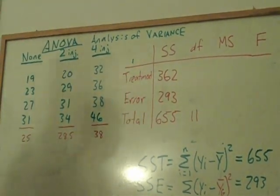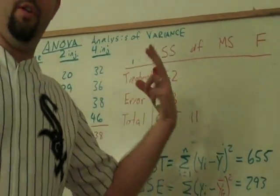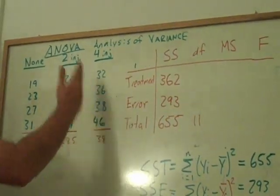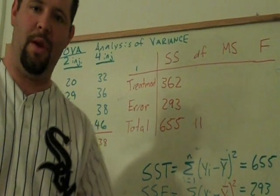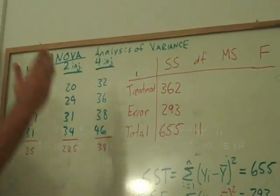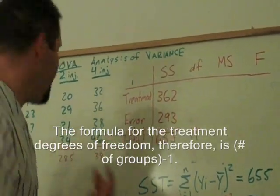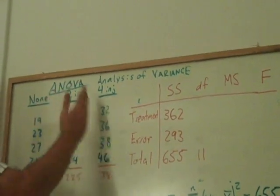Now, in addition to estimating the total mean, we have to estimate two other means to actually think about the treatment that we applied here. By estimating the overall, the grand mean, we kind of nail down one of these.